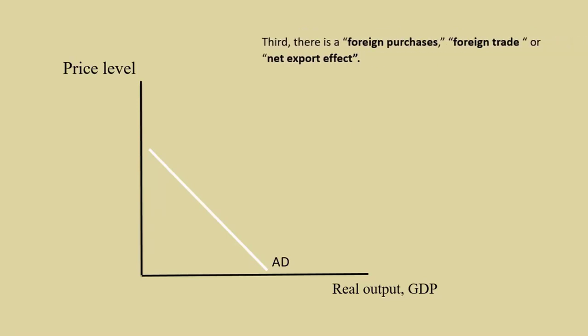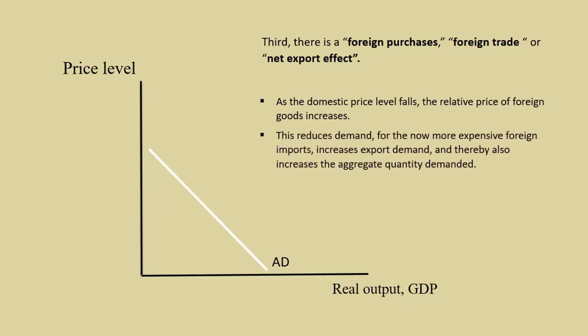Third, there is a foreign purchases, foreign trade, or net export effect. As the domestic price level falls, the relative price of foreign goods increases. This reduces demand for the now more expensive foreign imports, increases export demand, and thereby also increases the aggregate quantity demanded.